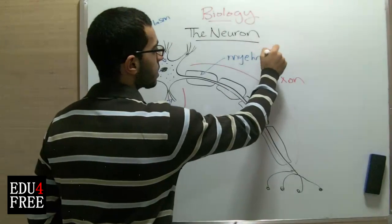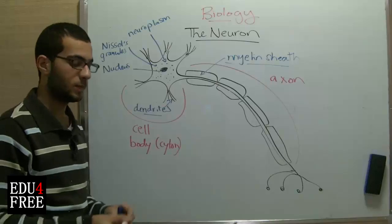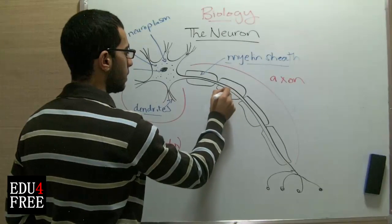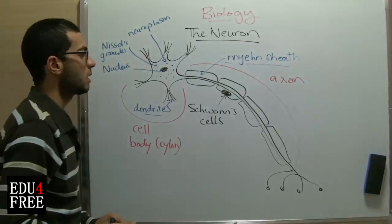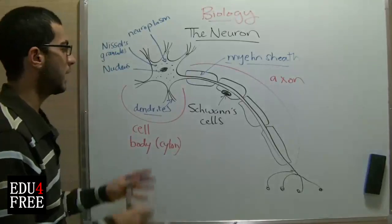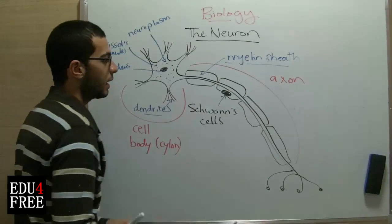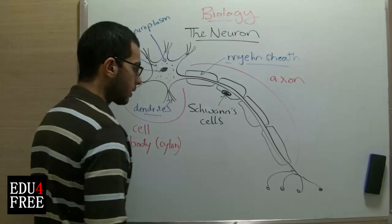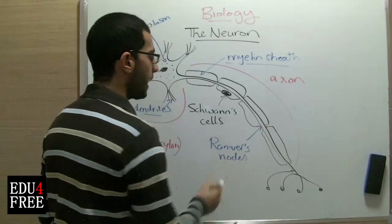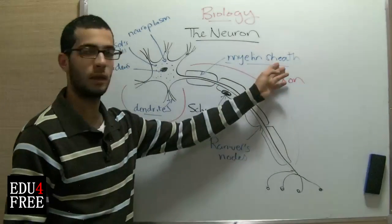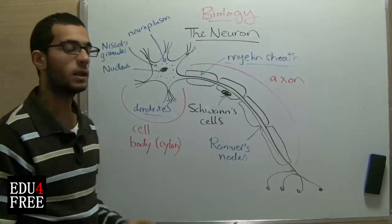The myelin sheath is a proteinic substance produced by some cells on the axon, and they are called Schwann cells. The myelin sheath acts as an insulator. Not all axons are covered by the myelin sheath, and in the same neuron we can see that it is interrupted at some points. These points are called nodes of Ranvier. Axons which are insulated by the myelin sheath are called myelinated axons, and the ones not covered by the myelin sheath are called non-myelinated axons.